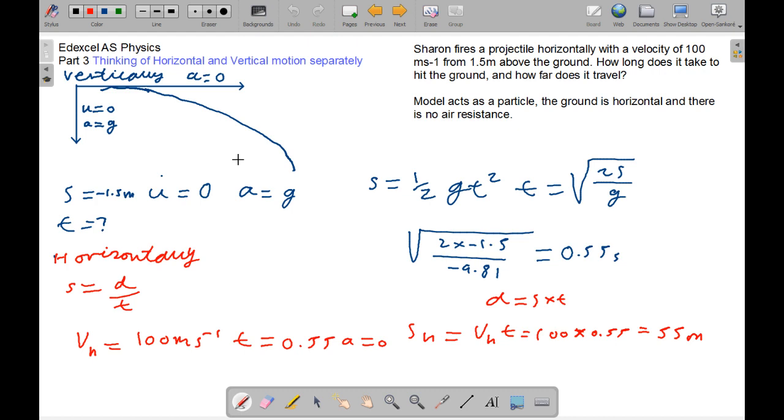With a velocity of 100 ms-1, and 1.5 meters above the ground. How long does it take to hit the ground, and how far does it travel? So, it acts as a particle, that means it can behave like a particle, and it can be a projectile. And the ground is horizontal, and there is no air resistance whatsoever.